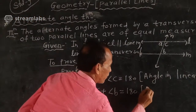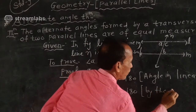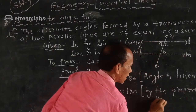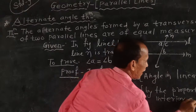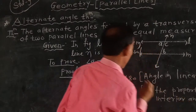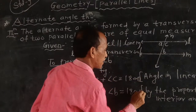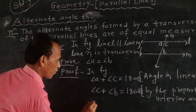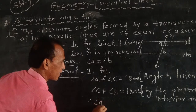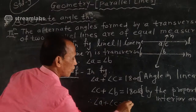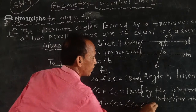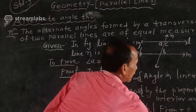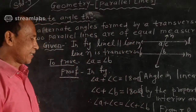By the property of interior angles: this is statement 1 and statement 2. From statements 1 and 2, angle A plus angle C equals angle C plus angle B.